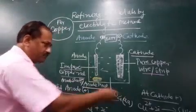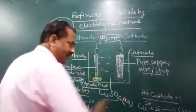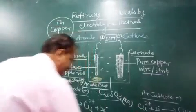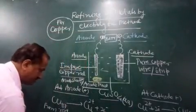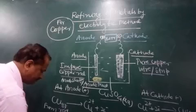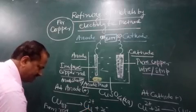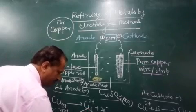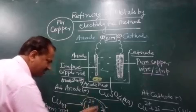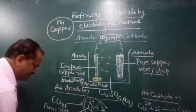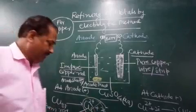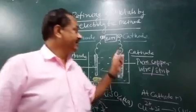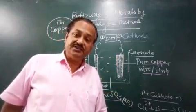If we join the two reactions together: at the anode, copper solid is oxidized to copper ions; at the cathode, copper ions gain electrons and are reduced back to pure copper solid. The intermediate terms cancel out, so copper from the impure anode rod is effectively converted to pure copper deposited at the cathode. This is the electrolytic method for the refining of copper.